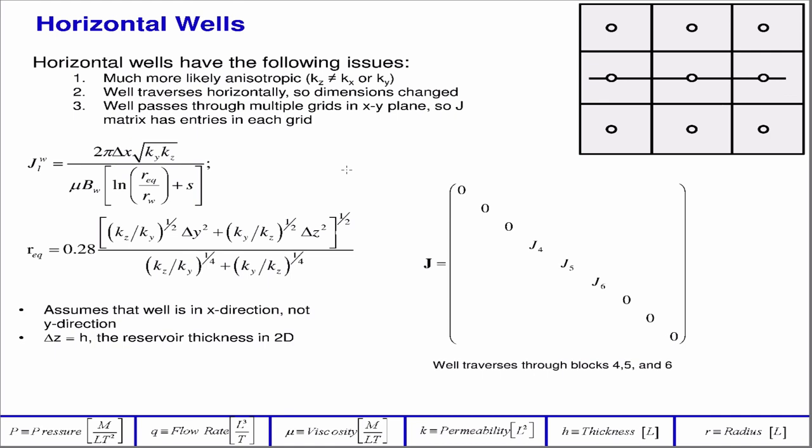In a horizontal well, which is pretty common these days, your well doesn't just reside in one grid block, it traverses through them. And so a couple of things. One is every grid block that it passes through, you're going to need a productivity index for. So you have to compute that at every grid block that it passes through. And additionally, when you do compute the productivity index, now your area is a function of your Delta X. It's not just some constant height into the board, it's a function of Delta X which is passing through that way.